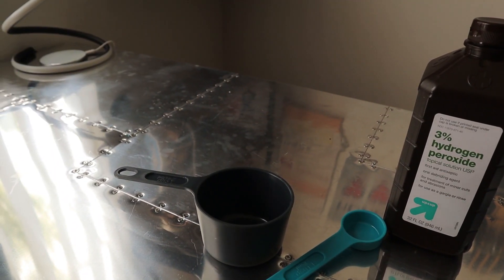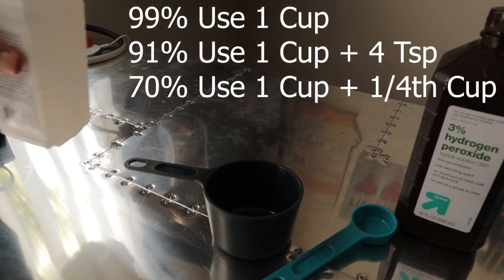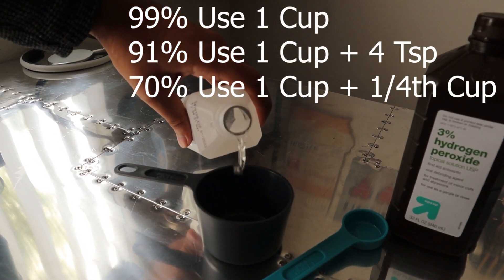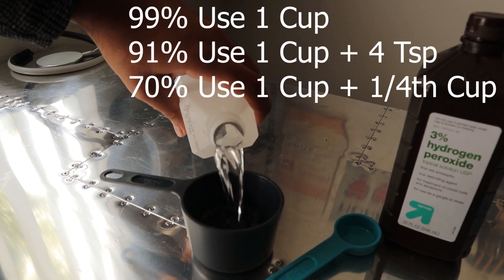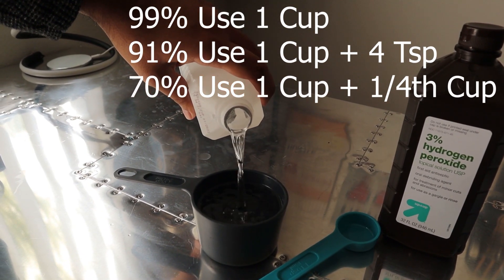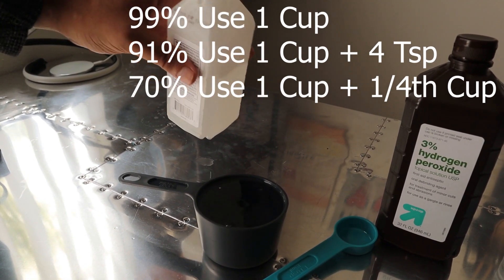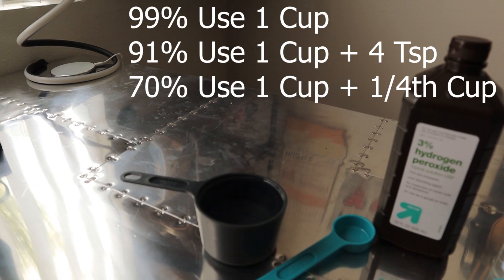The first step: measure out your 1 cup of 99% isopropyl alcohol. If you don't have the 99% version but have 91%, add the 1 cup then add in 4 teaspoons. If you have 70% isopropyl alcohol, that's okay too. Add in the 1 cup then add in 1 fourth cup on top of that to make sure the concentrations are the same.